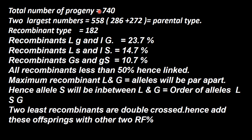In this test cross lab, the number of progenies are 740. From the 740 progenies, the two largest numbers are 286 and 272, totaling 558 — they are the parental type. So the recombinant type is 182 in total.